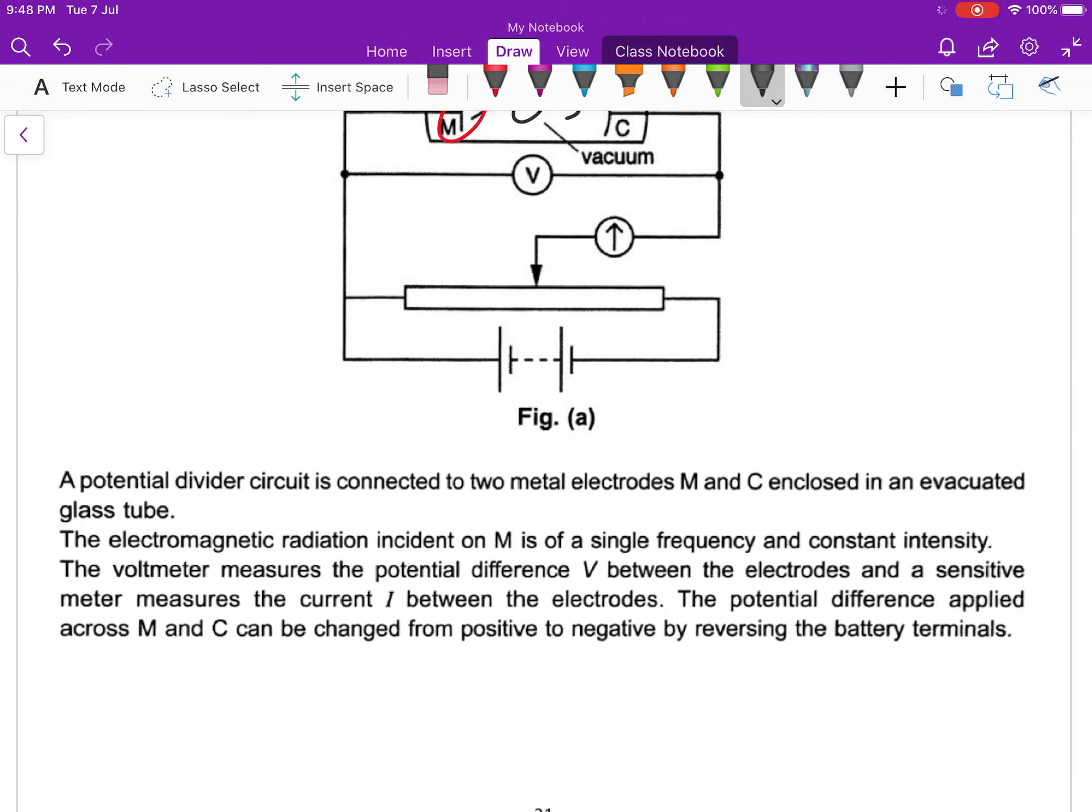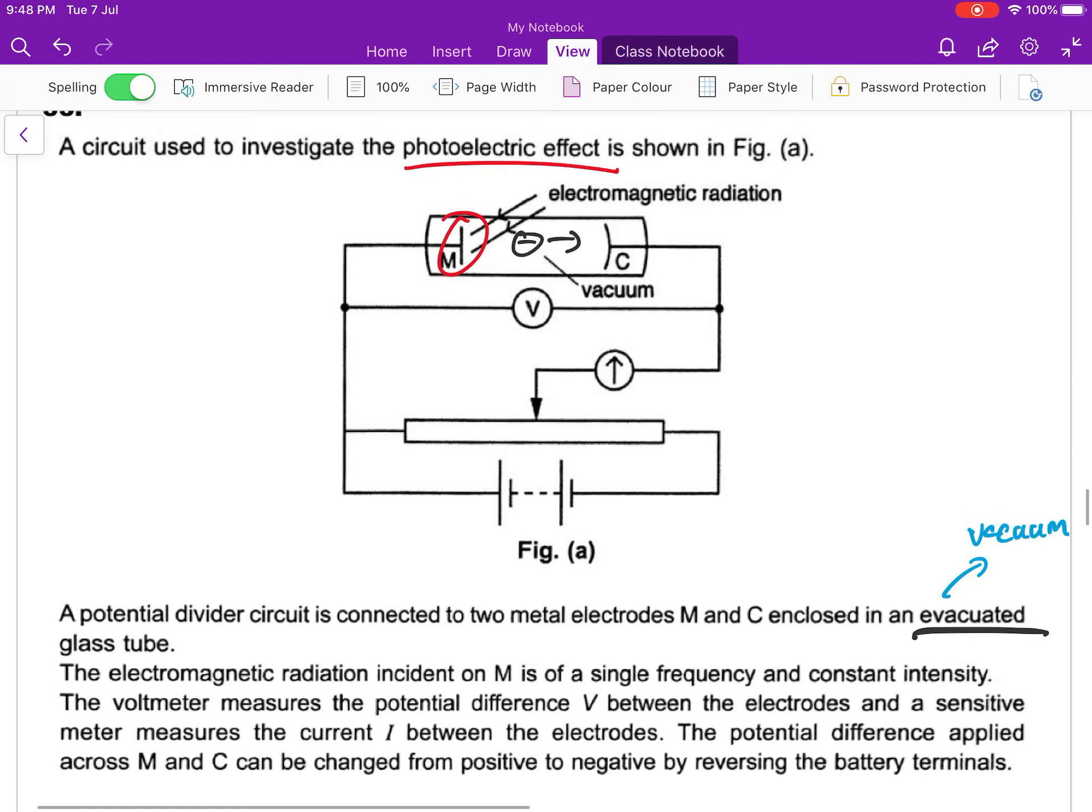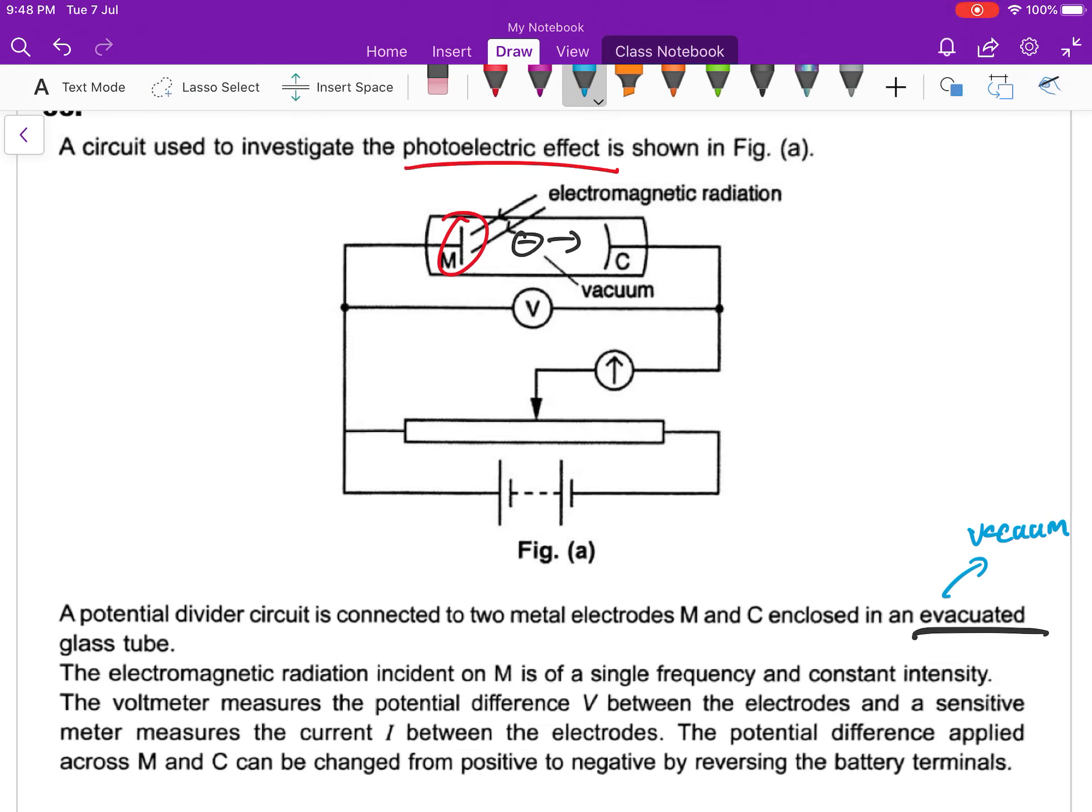Evacuated glass tube means vacuum. Why do we need vacuum? Because we don't want the air to affect the kinetic energy of the electrons.